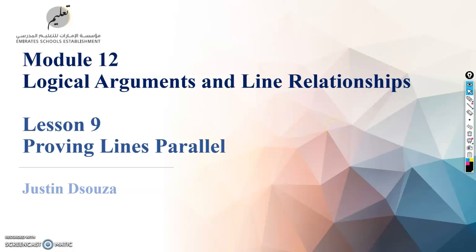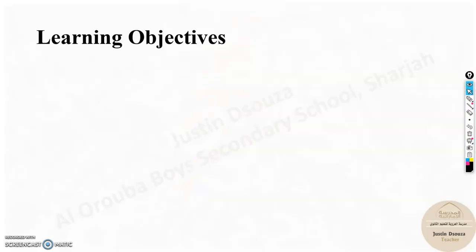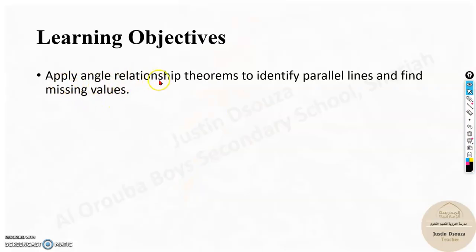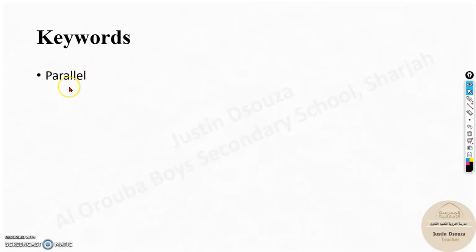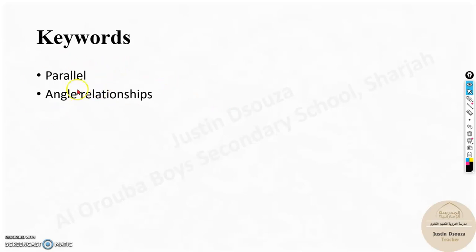Lesson 9 in module 12 is Proving Lines Parallel. This is a very simple lesson with only one objective: to apply angle relationship theorems to identify parallel lines and find missing values. The keywords are parallel and angle relationships, which we have already come across in the previous lessons.